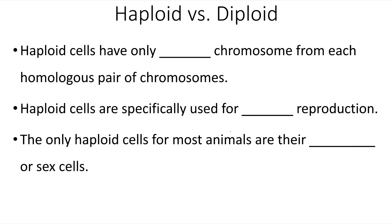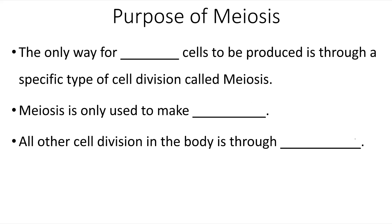So let's talk about this concept of haploid versus diploid. Haploid cells have only one chromosome from each homologous pair of chromosomes; haploid cells are specifically used for sexual reproduction — that's their only purpose. The only haploid cells for most animals are their gametes or sex cells. The only way for haploid cells to be produced is through this specific type of cell division called meiosis. Meiosis is only used to make the gametes; all of the other cell division in the body is through mitosis.